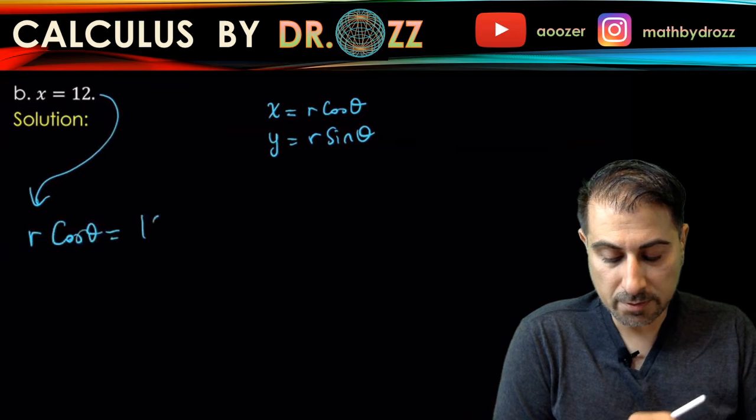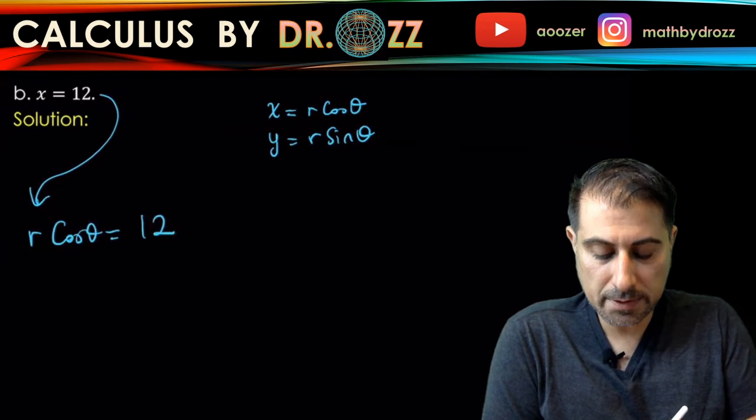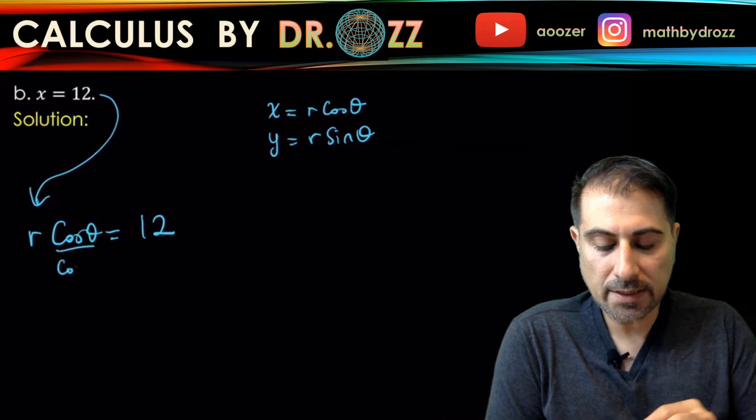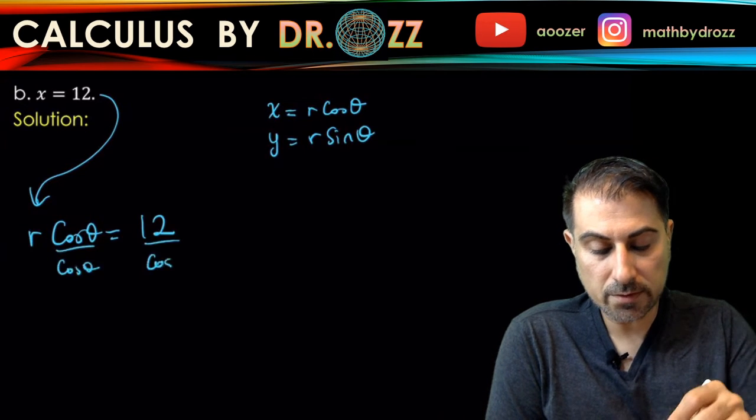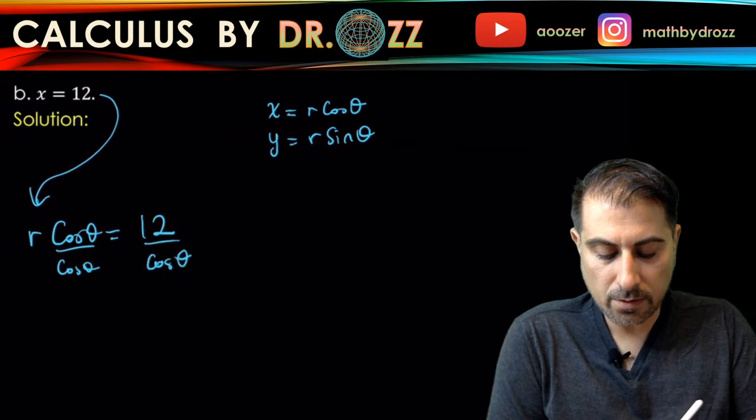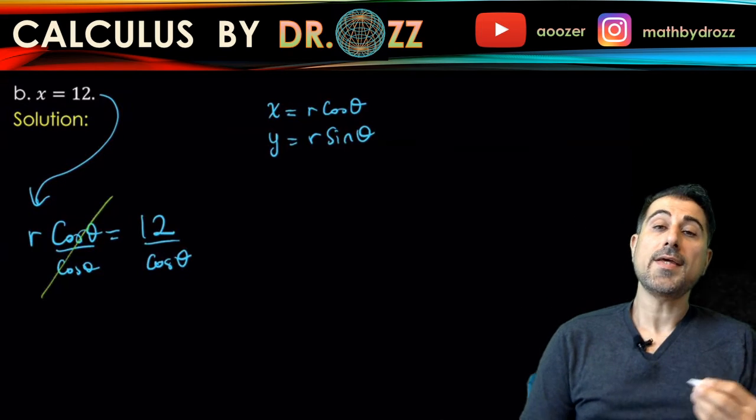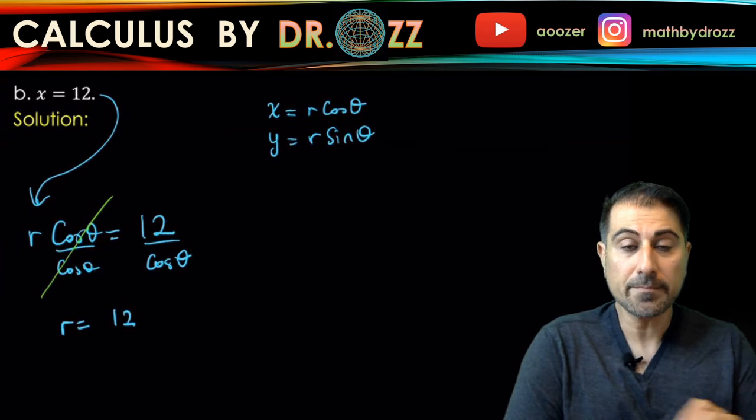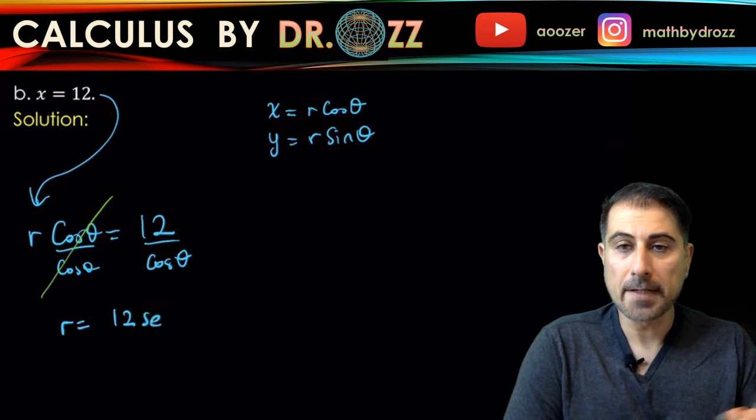And I'm just going to solve this for r by dividing both sides by cosine theta. These guys are gone. So r is going to be 12 over cosine theta, but 1 over cosine theta by definition is secant theta. And here we go.